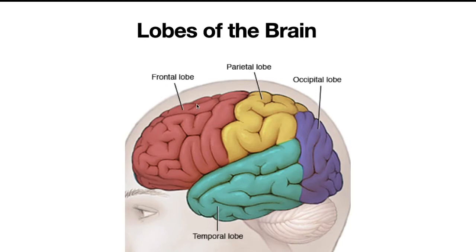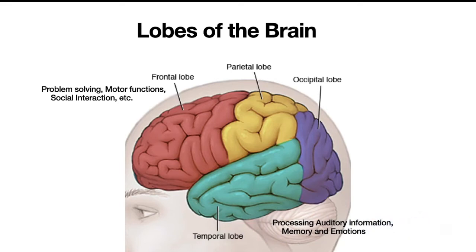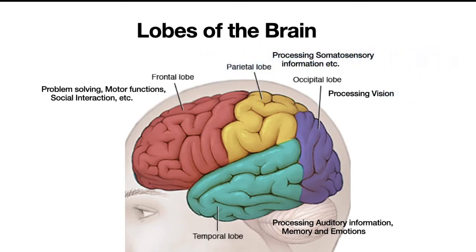These lobes are present in both hemispheres. The first is the frontal lobe, involved in problem solving, motor function, social interaction, and more. Then there's the temporal lobe, which is involved in processing auditory information, memories, and emotions. Then the occipital lobe, which is important for processing vision. And lastly, the parietal lobe, which is important for processing somatosensory information.